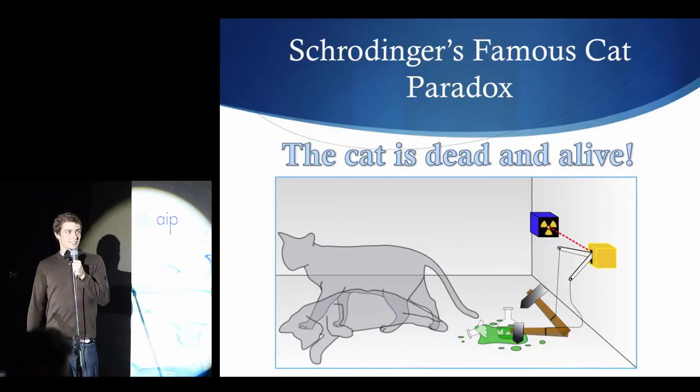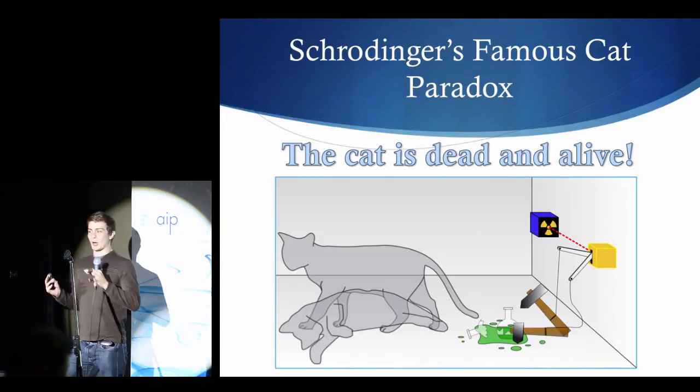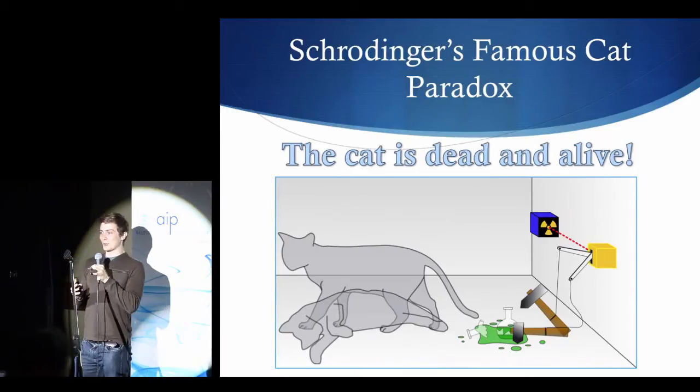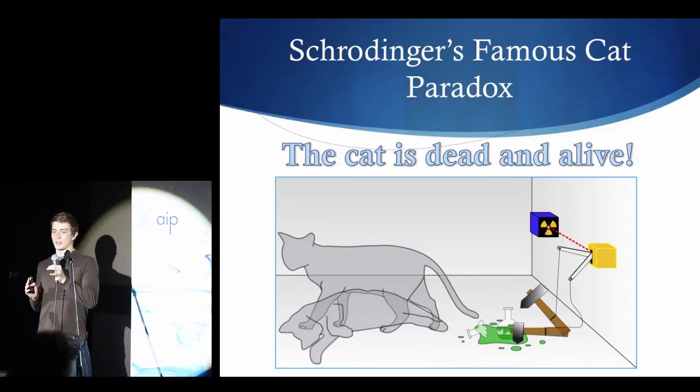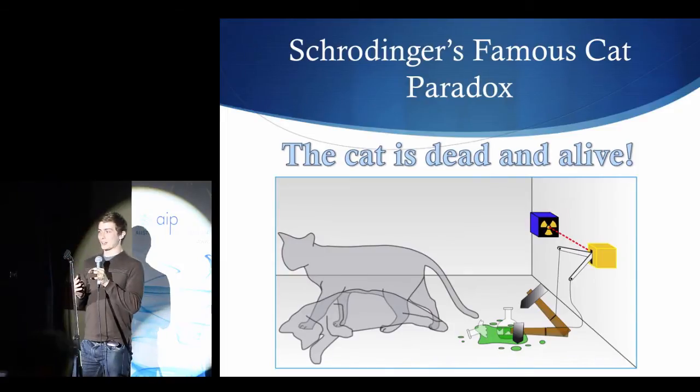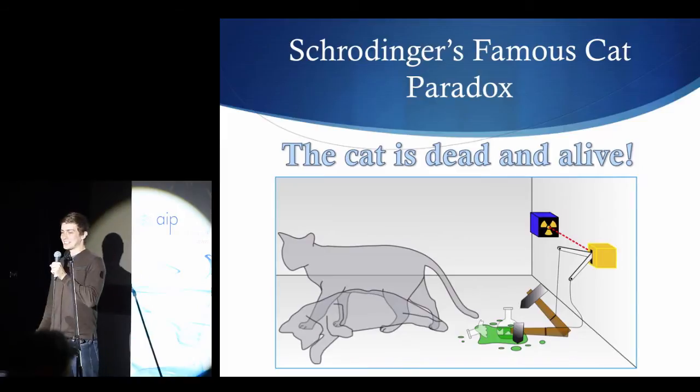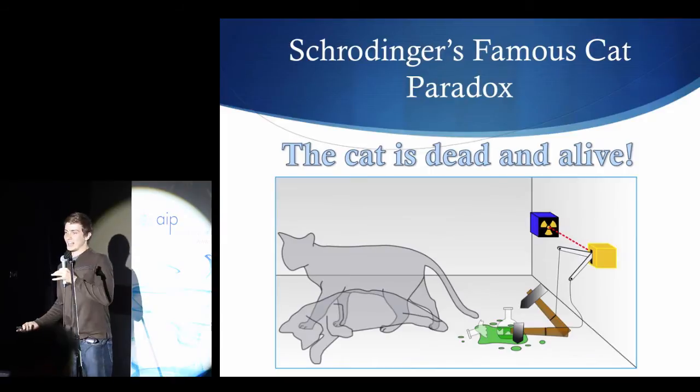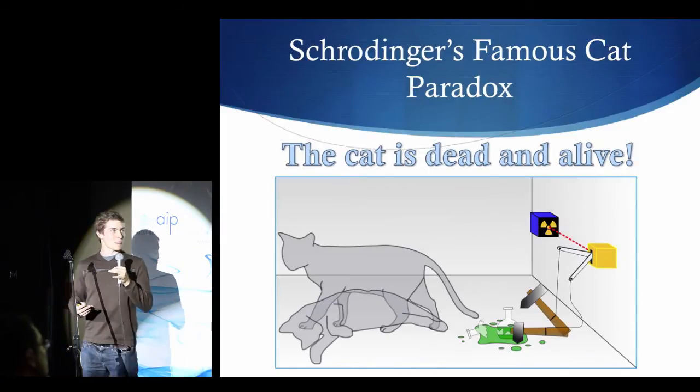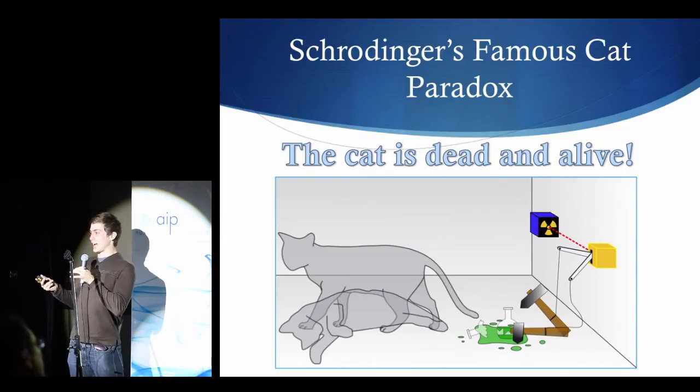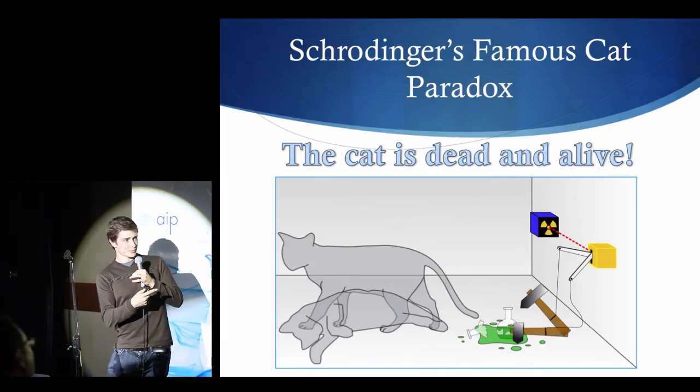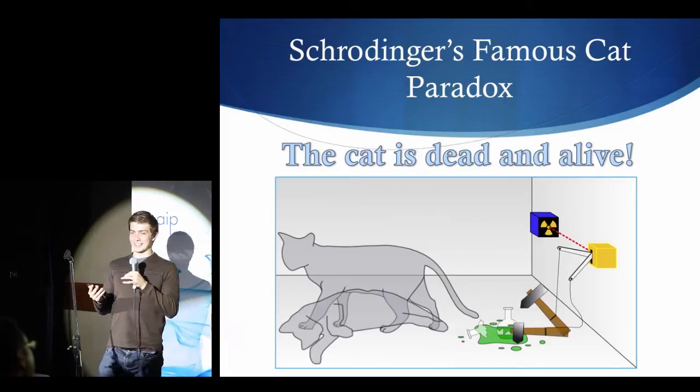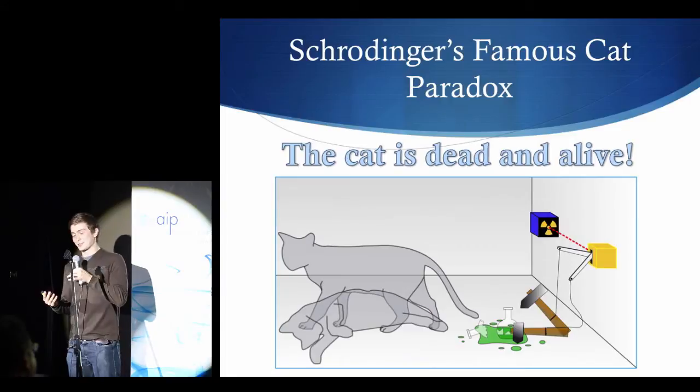Now, the way this goes is basically you take a box, you put inside of it a cat, a hammer, a flask of poison, a switch, and a uranium atom. Now, this uranium atom is in the superposition state of either decayed or not decayed. It's a quantum particle, it's following the superposition principle. And the way it goes is if the atom decays, it flips the switch, which triggers the hammer to break the flask of poison, and the cat is then dead, unfortunately for the cat.